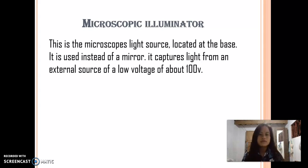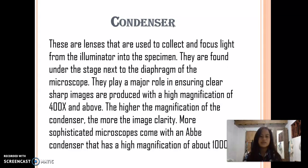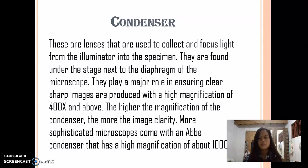Microscopic illuminator — this is the microscope light source, located at the base. It is used in place of a mirror and captures light from an external source at a low voltage of about 100 volts. Condenser — these are lenses used to collect and focus light from the illuminator into the specimen. They are found under the stage next to the diaphragm. They play a major role in ensuring a clear, sharp image at high magnification of 400 times and above. The higher the magnification of the condenser, the more image clarity. More sophisticated microscopes come with an Abbe condenser at a high magnification of about 1000 times.